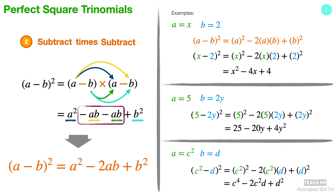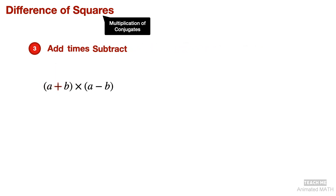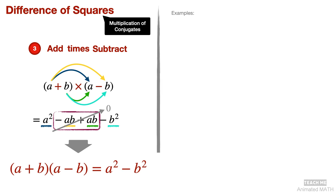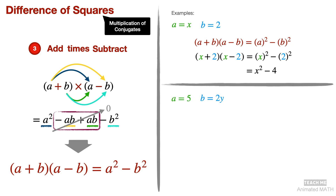The last pattern is difference of squares, also called multiplication of conjugates, or the pattern add times subtract. Apply the distributive property when multiplying the binomials. Combining the ab terms will cancel them out, and the final pattern is a squared minus b squared. Here is how you can use this pattern: substitute x for all a's and substitute 2 for all b's. Its expanded form is equal to x squared minus 4. And here are a few more examples.